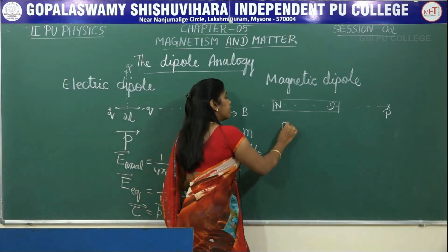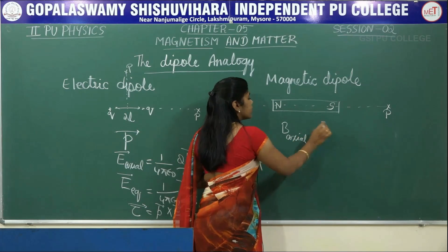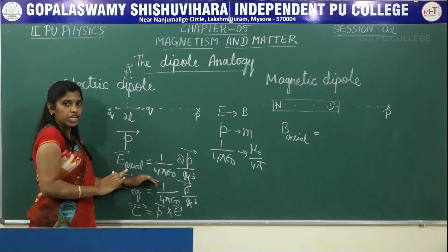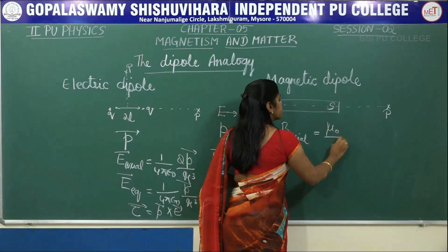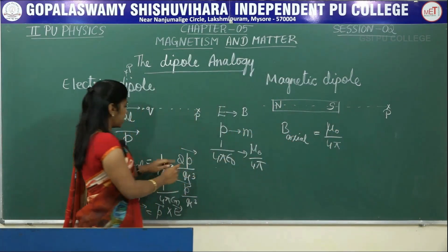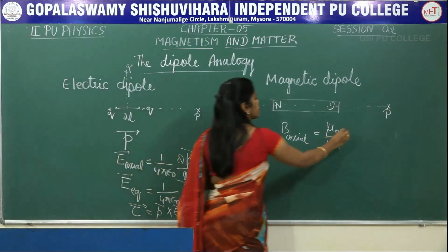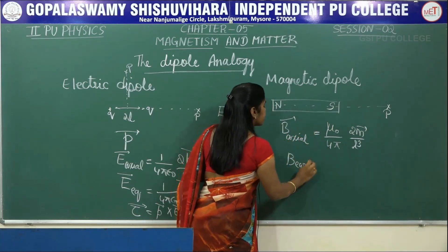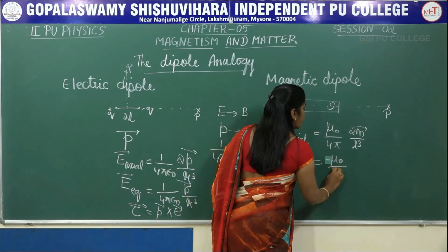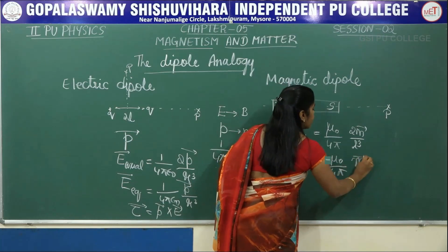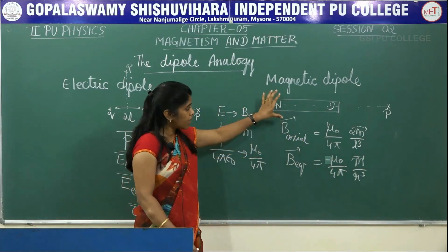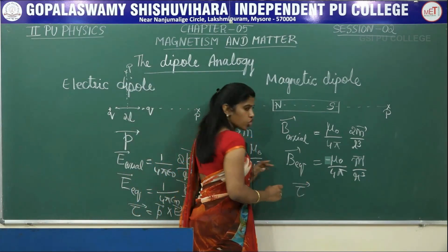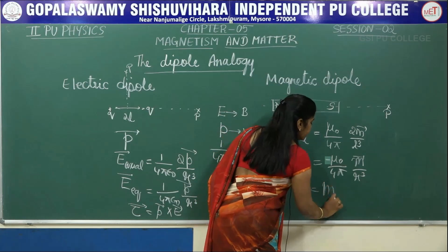Then what will be the magnetic field on the axial line? Just replace these things in the formula. B axial = μ₀/(4π) · 2m/r³. And B equatorial = μ₀/(4π) · m/r³. When you place this bar magnet in an external magnetic field, the bar magnet experiences a torque given by τ = M × B.